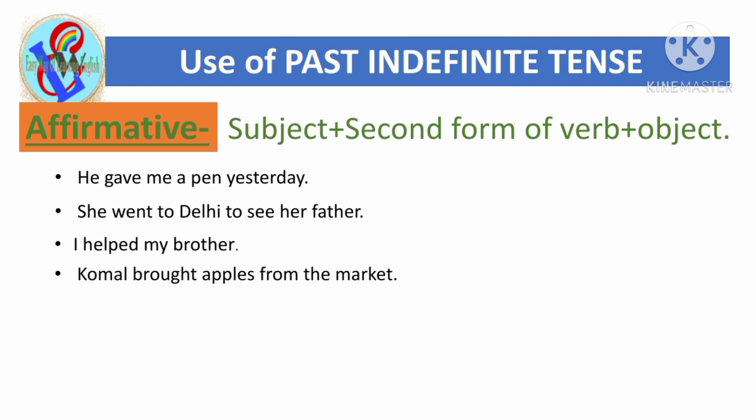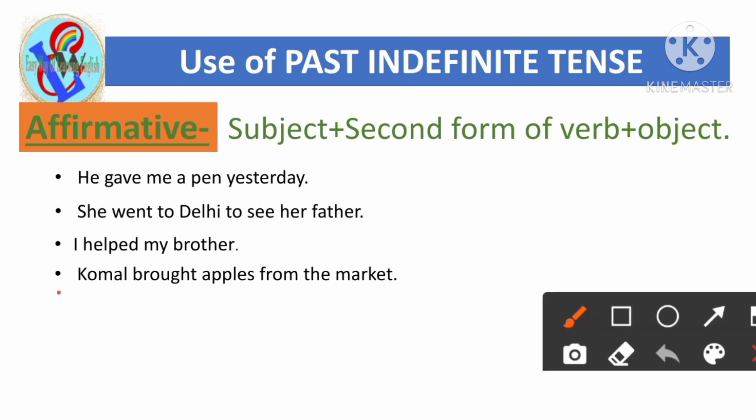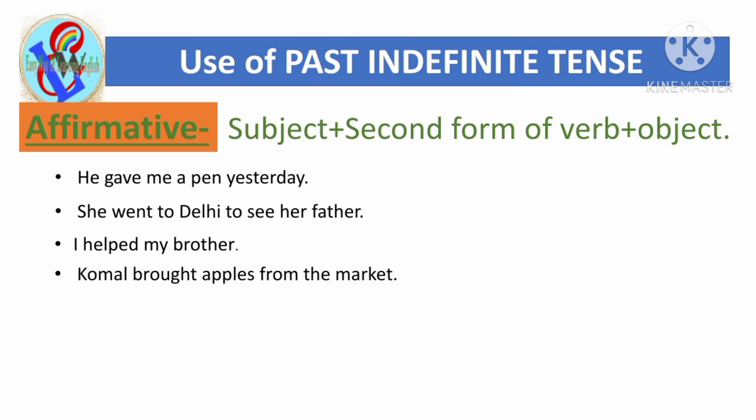'Komal brought apples from the market.' Here 'Komal' is the subject, 'brought' is the second form of 'bring' — 'bring' means to bring and 'brought' means brought — and 'apples' is the object.